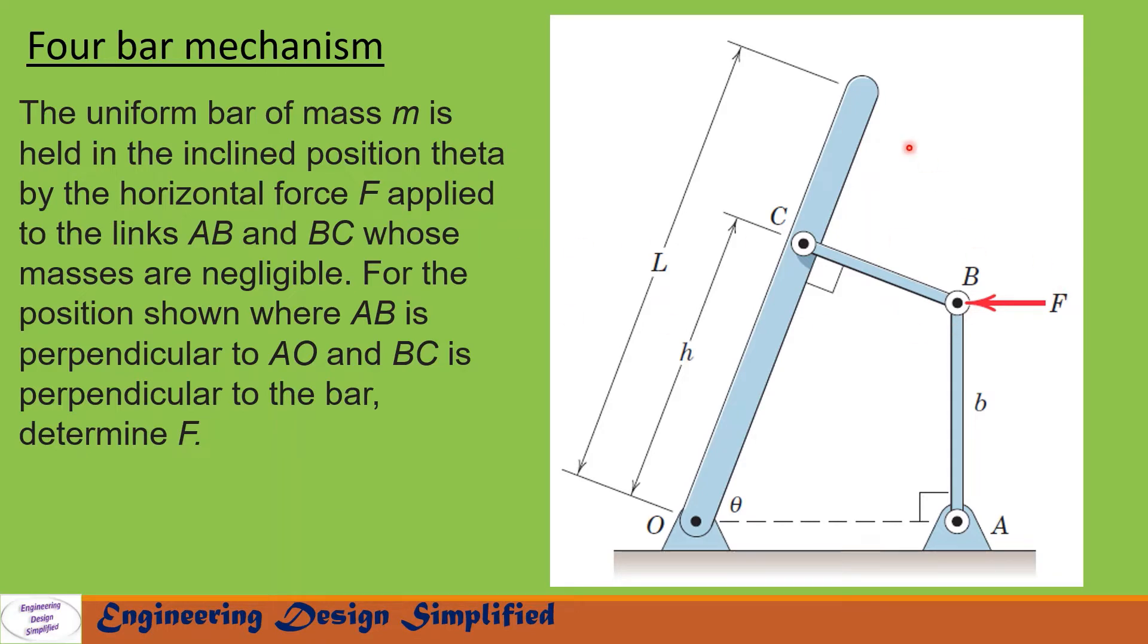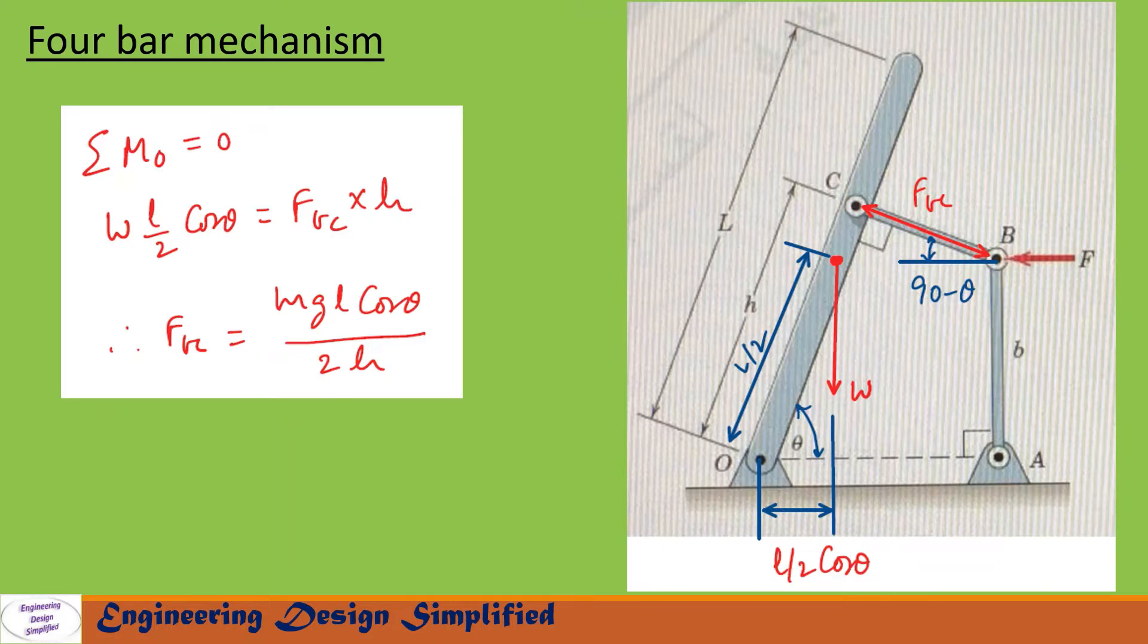First let us see forces and reactions. The uniform bar of mass m has its weight acting vertically downwards from the center of the bar. The distance from O to the center point is L by 2 since the total length is L. There is a force F applied at point B. Due to this force, the link CB will experience a compression, so the reaction FBC, a compressive force in CB, is shown here.